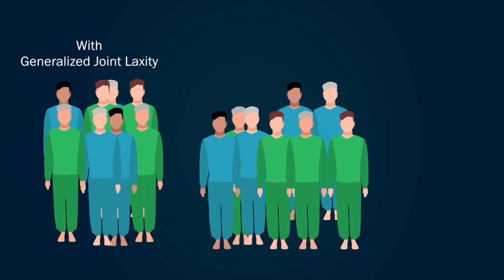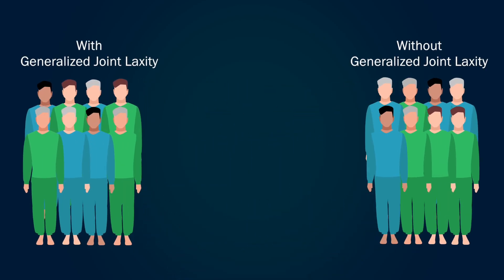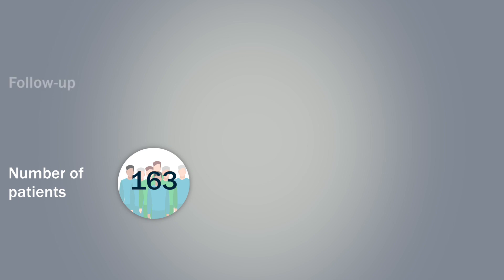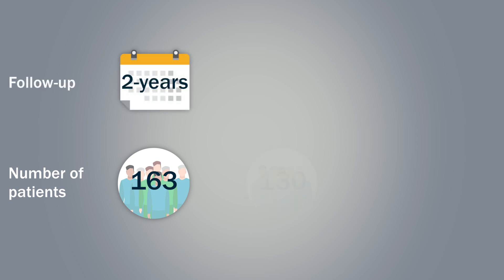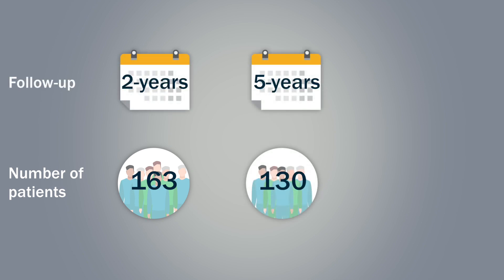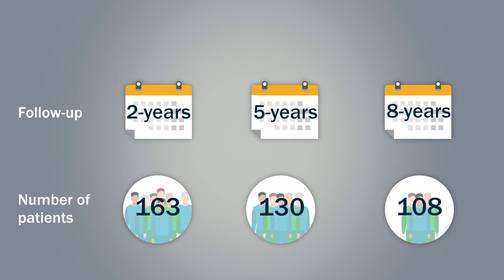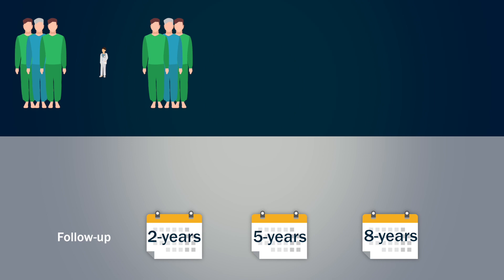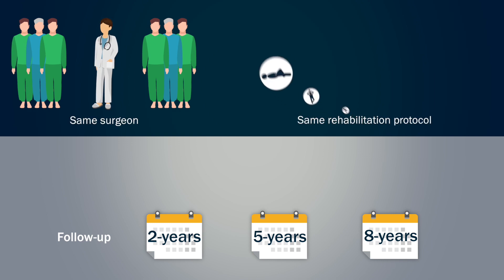The patients were split into two groups: those with and those without generalized joint laxity. Generalized joint laxity was defined using the Beighton and Horan criteria, which was modified in order to exclude the involved knee. 163 patients were followed for two years, 130 patients for five years, and 108 patients for eight years. All patients had the same surgeon and the same rehabilitation protocol.